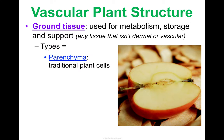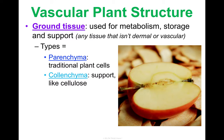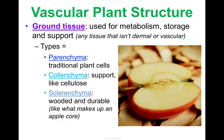The last tissue type is ground tissue, used for metabolism, storing, and supporting. If it's not dermal and not vascular, it falls into this ground tissue category. There are a couple types of cells that make up ground tissues. Parenchyma are your traditional plant cells — what you'd typically draw. Collenchyma is more supportive, like the structural cellulose cells. And sclerenchyma is woody and durable — even more structural. This is what you find in the middle of an apple core: you can eat it, but it has that woody feel.